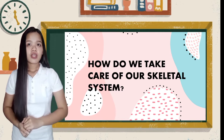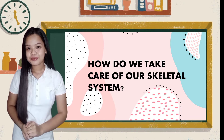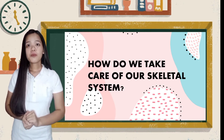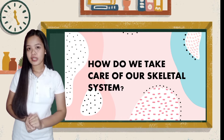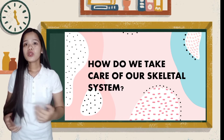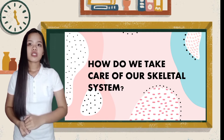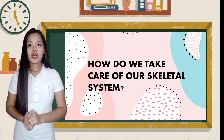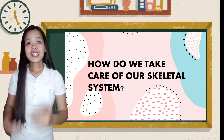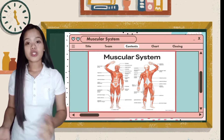All of your answers are correct ways to make our bones healthy. We also need to give our bones a checkup so that if there is something wrong, we can cure it as soon as possible. Let's proceed to the third organ system — the muscular system.